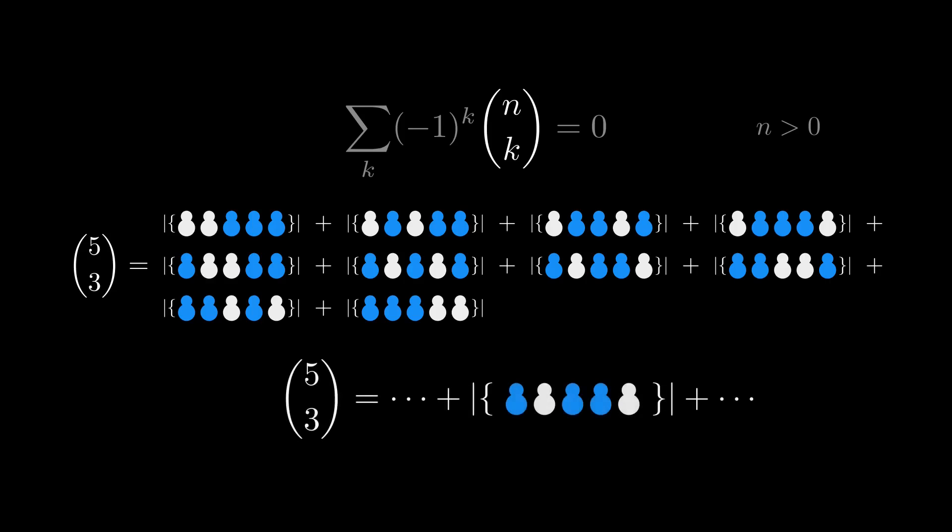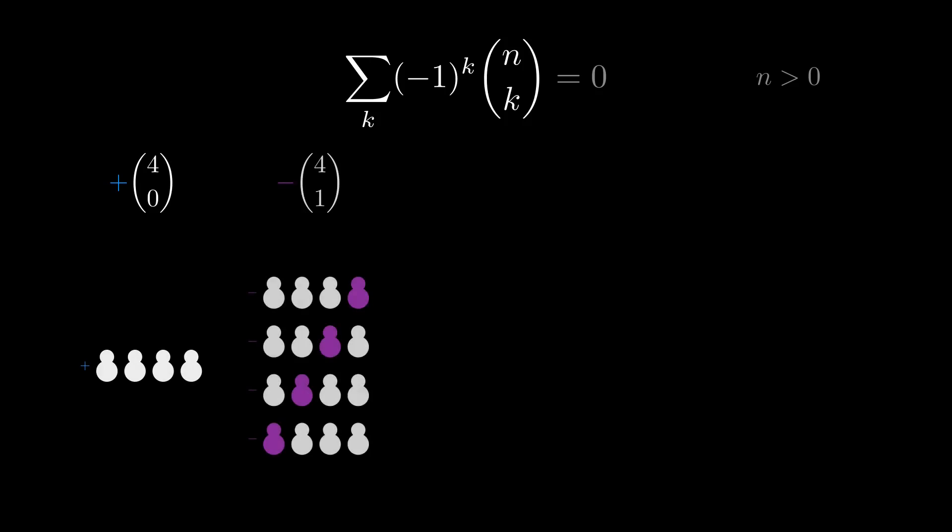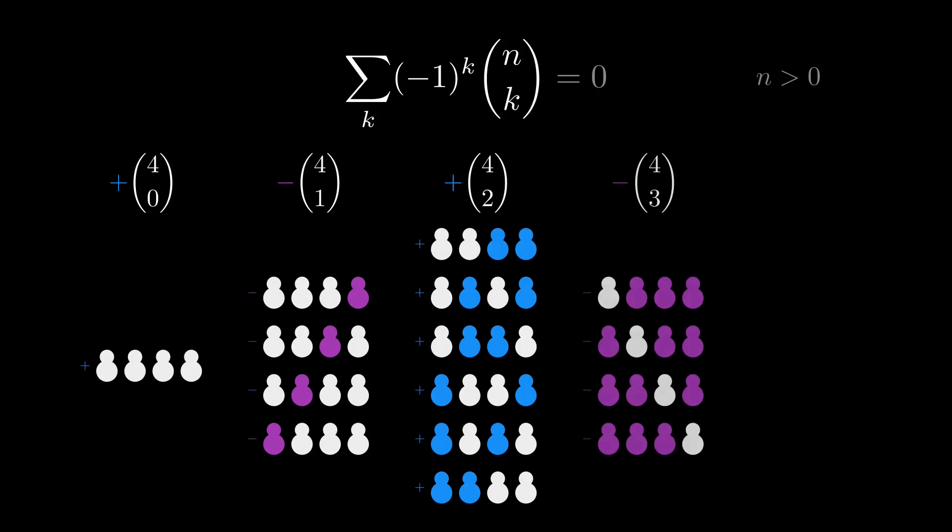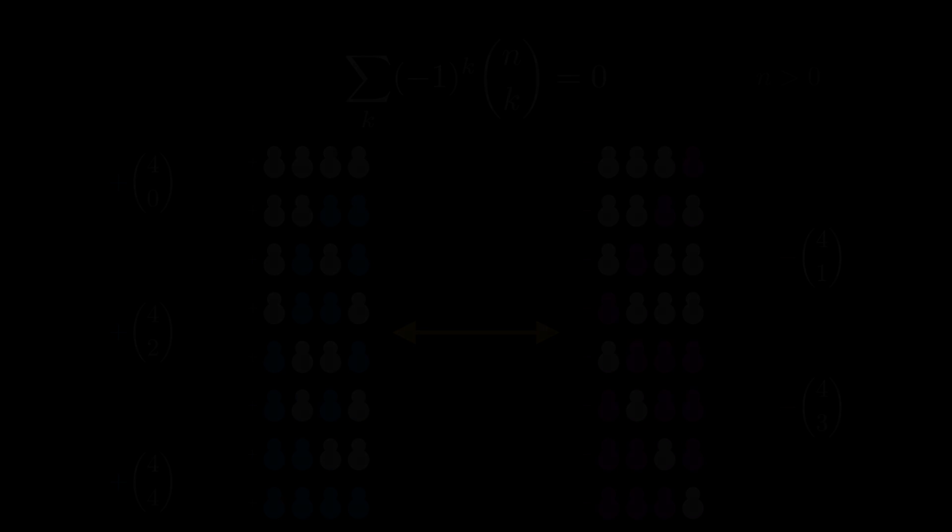Rather than thinking of n choose k as a whole term, think of the individual configurations that it counts. When n is 5 and k is 3, n choose k is 10. This term enumerates these 10 ways of choosing our team of size 3 from a group of size 5. Instead of thinking of 5 choose 3 as an unbroken set, we could imagine each individual situation counted by 5 choose 3 as contributing one configuration to it at a time. Really, we could do that for any combinatorial expression. It seems kind of silly to do this, so why break things down this way?